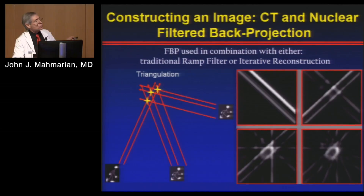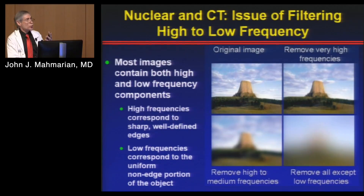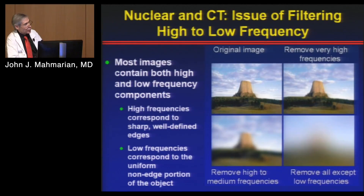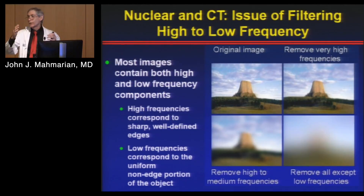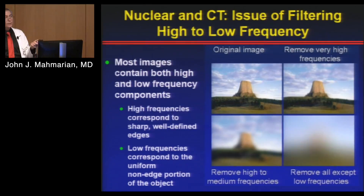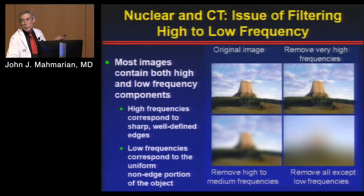We do filtered back projection, using a combination of traditional filtering mechanisms — whether it be the ramp filter or iterative reconstruction. When we do filtering, we can filter out anything we want, or be as granular as we want. If you take away all of the high frequencies — basically edges — you finally get to nothing. It's very important to pick the right filtering in terms of what high frequencies you want to eliminate and what to keep, to get an image you can identify structure in without excessive granularity. This is exactly what a camera does when filtering pixels, and it's what we do in CT and nuclear as well.